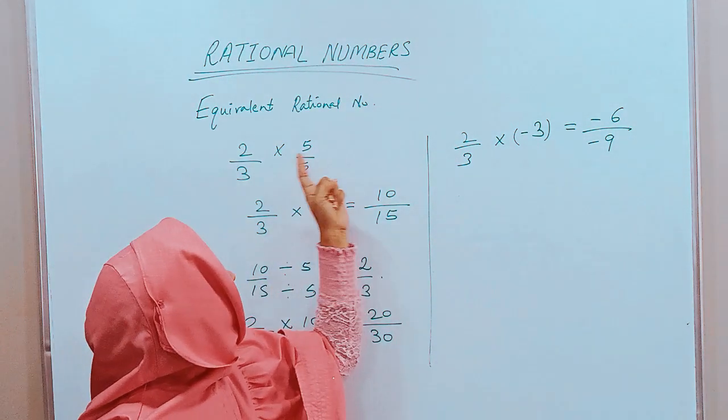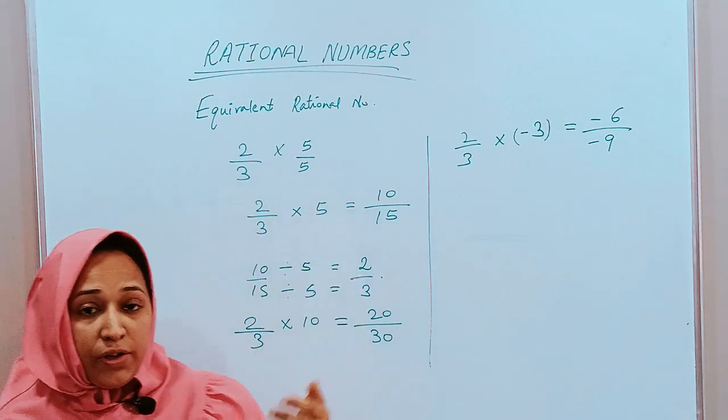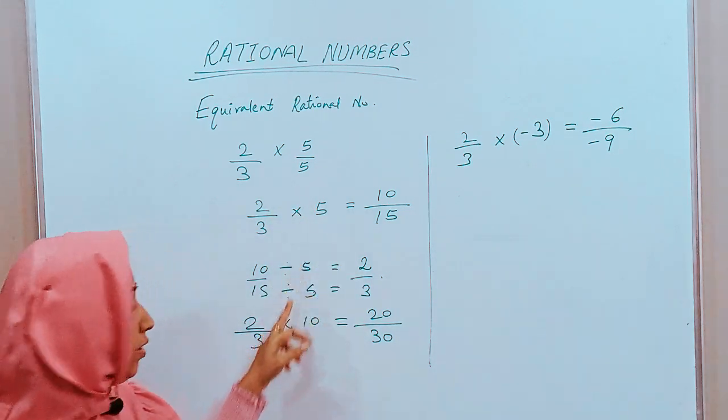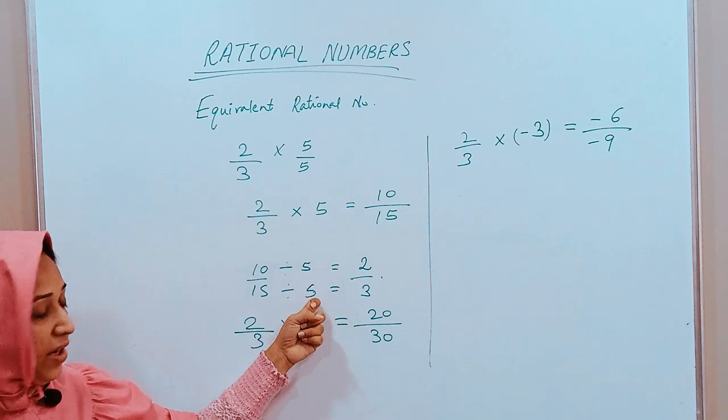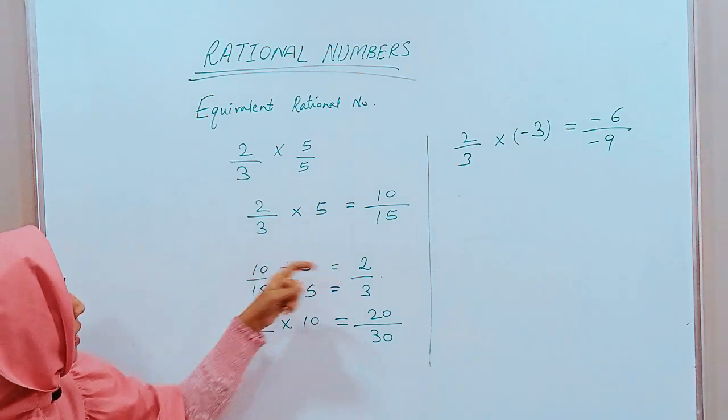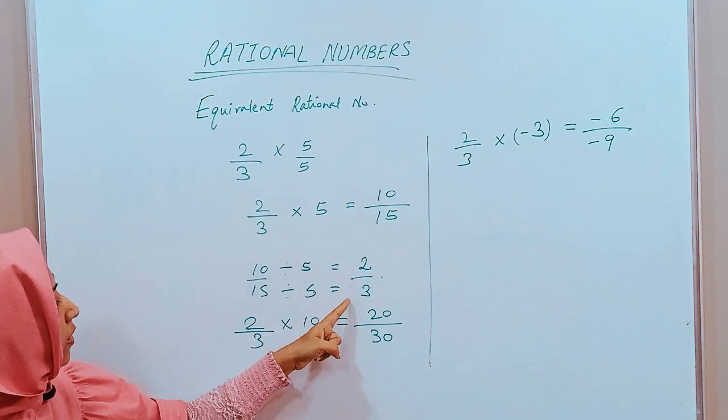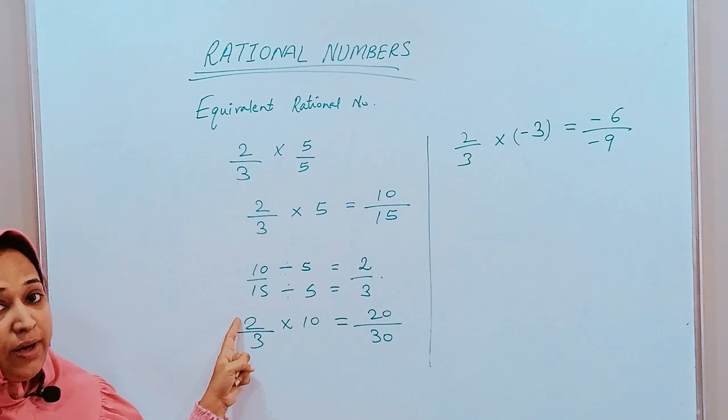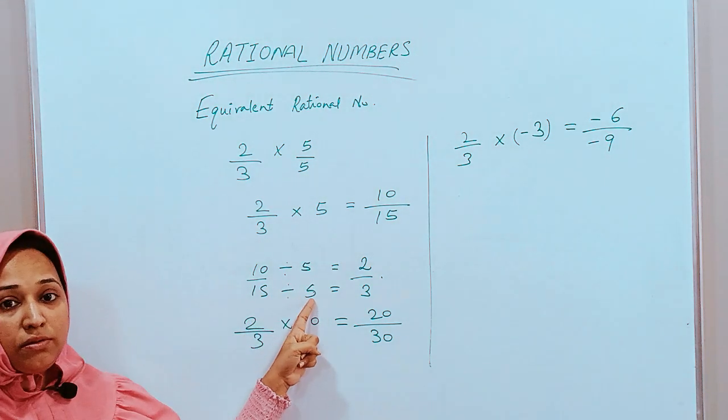Now, instead of multiplying, when we reduce, we also divide. Like here, we divided it by 5. So, we can say 2 by 3 is equivalent to 10 by 15 by dividing it with the same number.